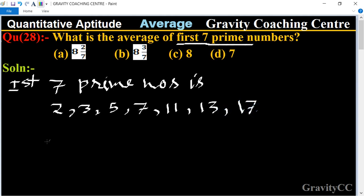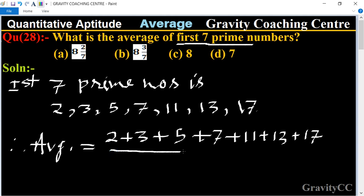So, therefore, their average is equal to 2 plus 3 plus 5 plus 7 plus 11 plus 13 plus 17, upon 7.